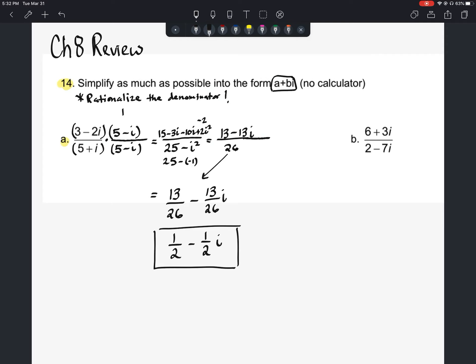All right, let's look here at the second one. So the second one here, we've got 6 plus 3i over 2 minus 7i. So the first thing, we know we have to rationalize the denominator. So in order to get rid of 2 minus 7i, we're going to have to multiply it by 2 plus 7i. And we'll do it on the top and the bottom.